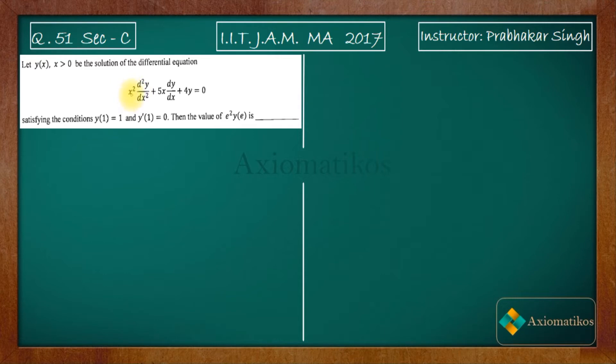x is there and its degree is 2, and the order of the derivative here is also 2. x is here, its degree is 1, and the order of the derivative is also 1. So what kind of differential equation is it? It's called Euler homogeneous differential equation, also called Euler-Cauchy equation.